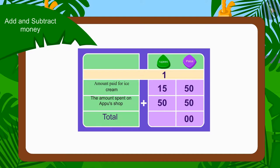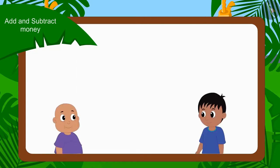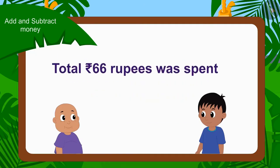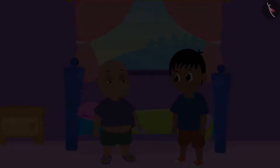Children, now can you add the total number of rupees? Well done, children — this is absolutely correct. 66 rupees in total. We have used addition to find these answers. In this way, Raju and Bablu spent a total of 66 rupees.